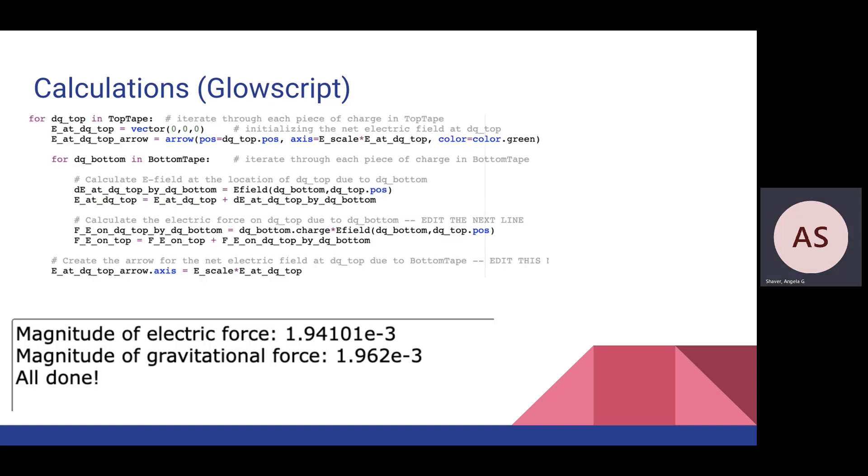From there, we made a loop that iterated through each point charge on the piece of tape. We calculated the electric field from each point and combined them into the total electric field. At the end, we got these results, shown at the bottom half of the slide.